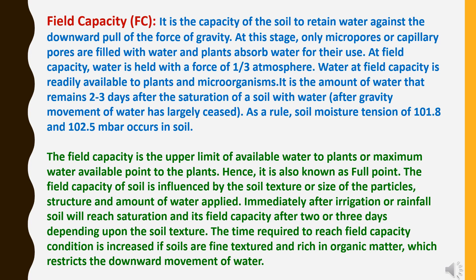Field capacity is the capacity of the soil to retain water against the downward pull of gravity. At this stage, only micro pores or capillary pores are filled with water and plants absorb water for their use. At field capacity, water is held with a force of 1/3 atmosphere and is readily available to plants and microorganisms. It is the amount of water that remains 2 to 3 days after saturation, after gravity movement of water has largely ceased. Soil moisture tension of 10^1.8 to 10^2.5 millibar occurs in the soil.